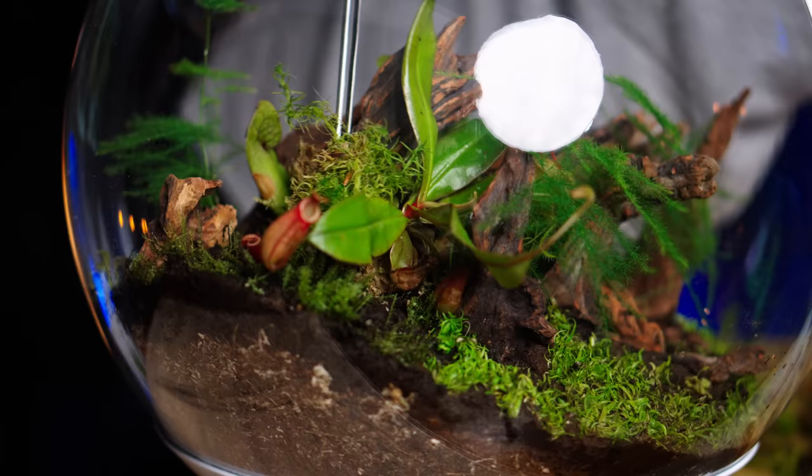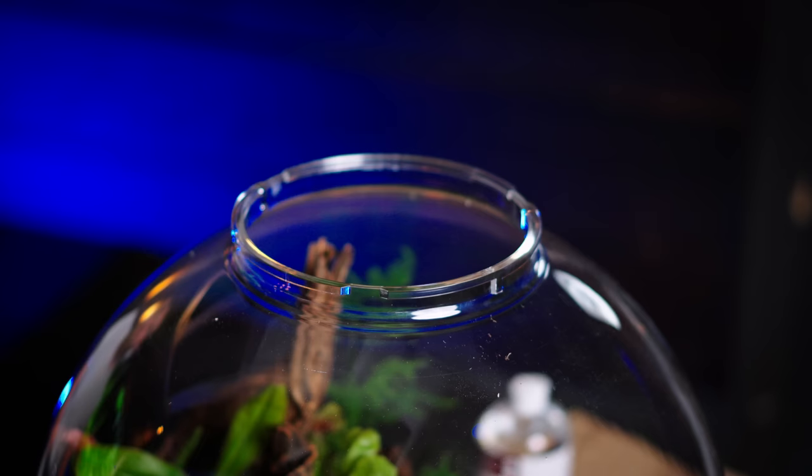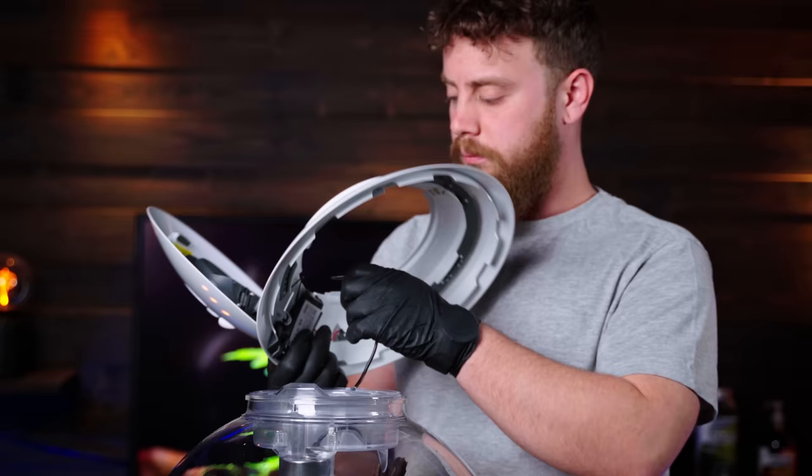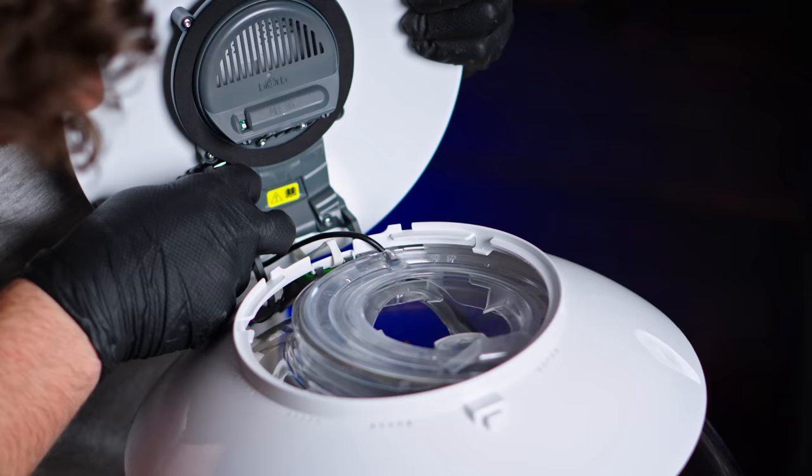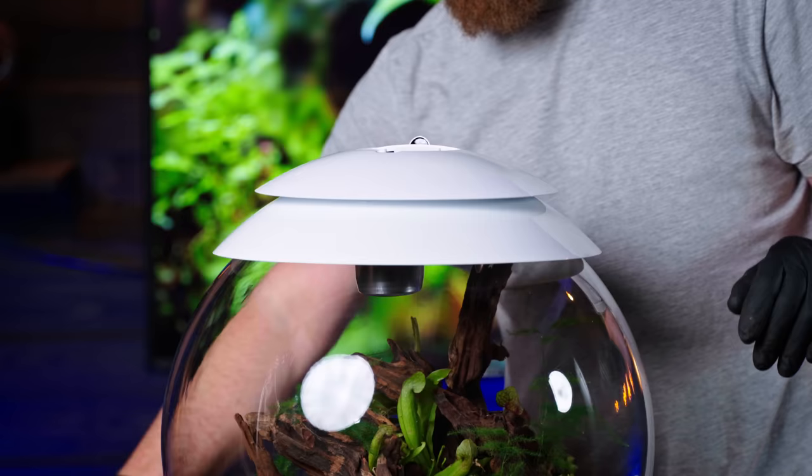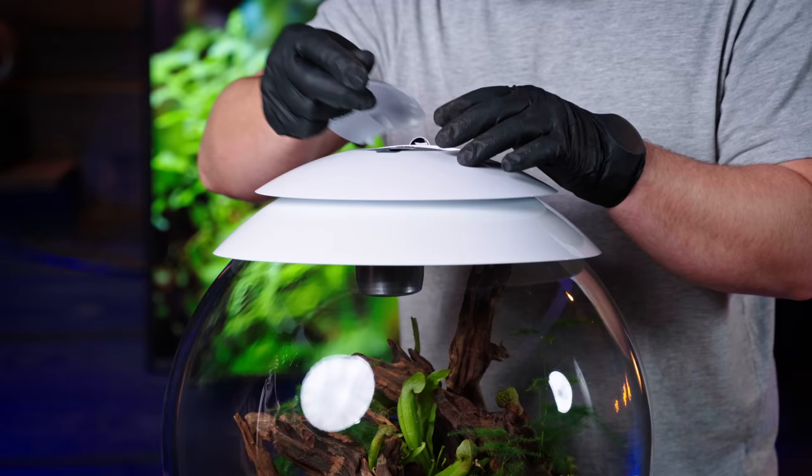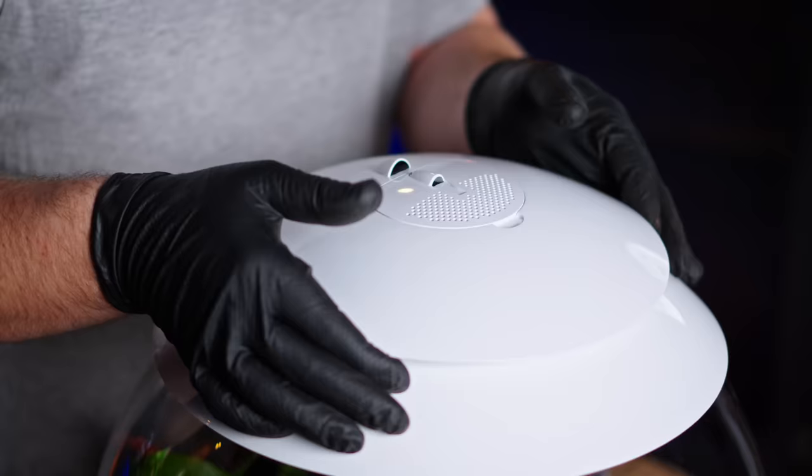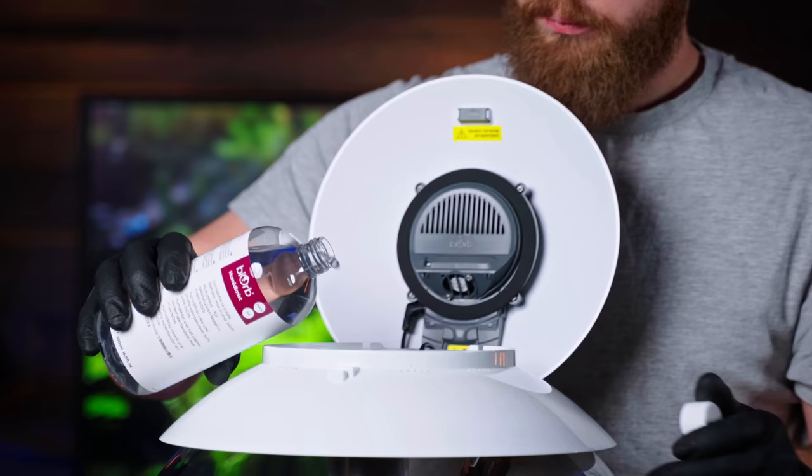Let's use some sphagnum moss at the top. And then finally, there's only one thing to be done, to assemble the top of the Biorb Air. This neat little product has active air circulation, lights, built-in humidifier, and it really has everything that you need for a good terrarium.